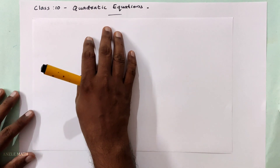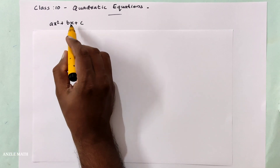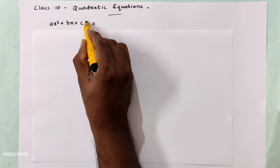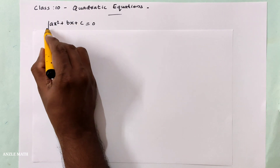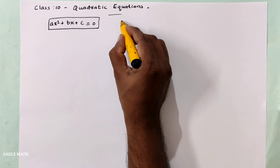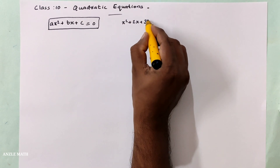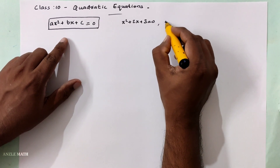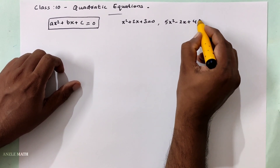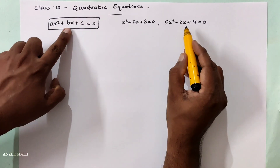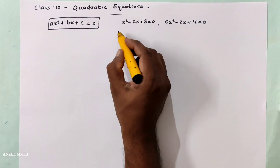What is a quadratic equation? We understand quadratic polynomials as ax² plus bx plus c. So ax² plus bx plus c equals 0 — this is a quadratic equation in standard form. Let's do two examples: x² plus 2x plus 3 equals 0. This is 5x² minus 2x plus 4 equals 0, where a equals 5, b equals minus 2, c equals 4.